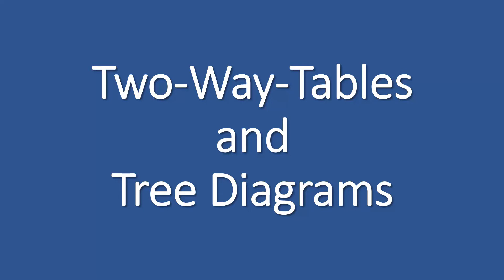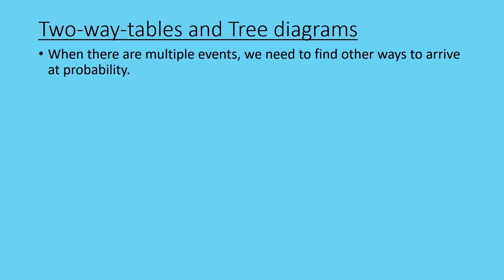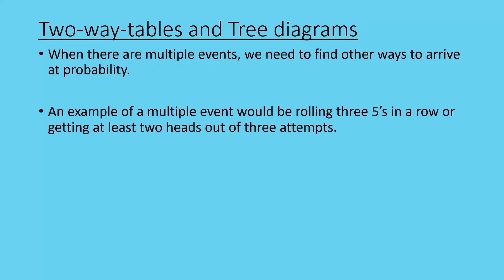We're looking at two-way tables and tree diagrams. You should remember these from before. When there are multiple events, we need to find other ways to arrive at probability — it's not as simple as just putting the favorable outcomes over the possible outcomes.